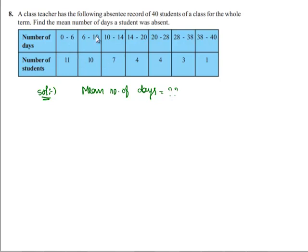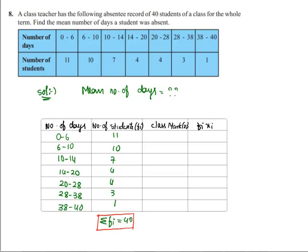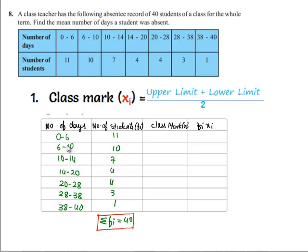Let's take the given data into the tabular form. Here in the tabular form we took number of days and number of students as frequency. The sum of total frequencies, that is Σfi, is 40. We should now find class mark, that is xi, which is the midpoint of the upper limit and lower limit.